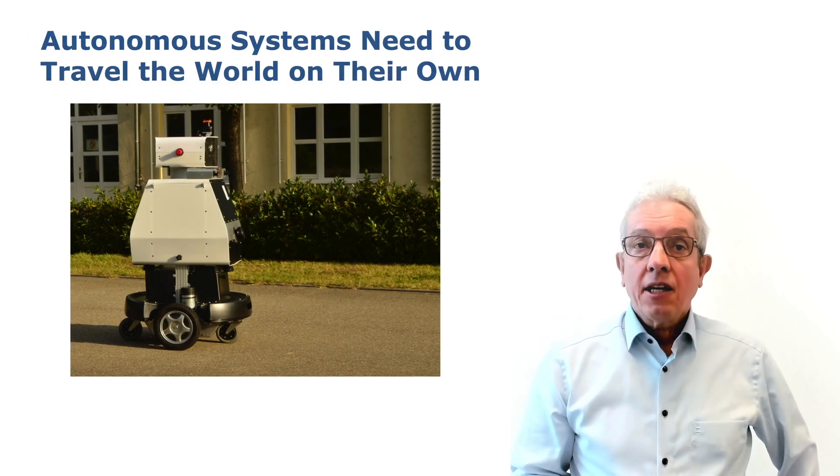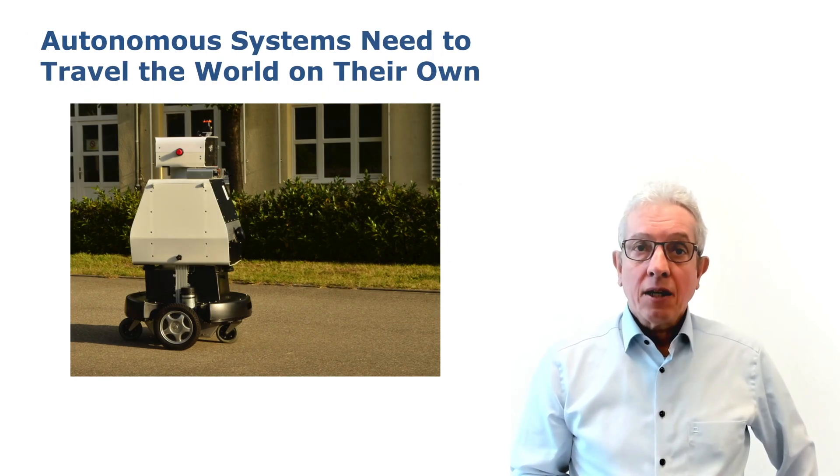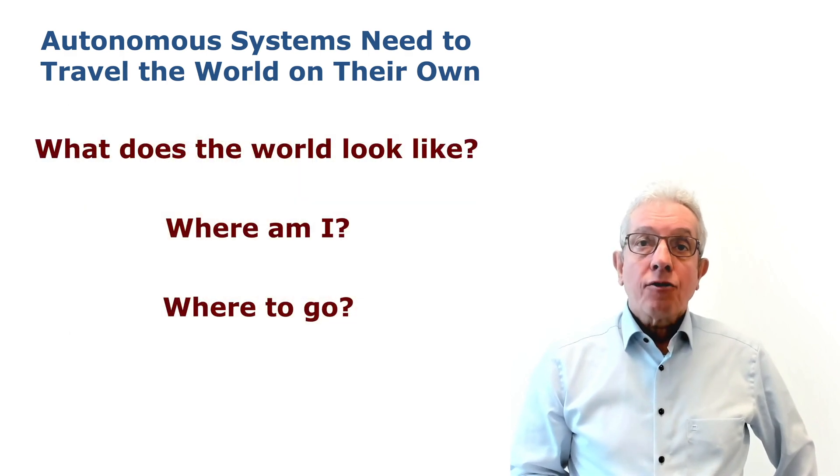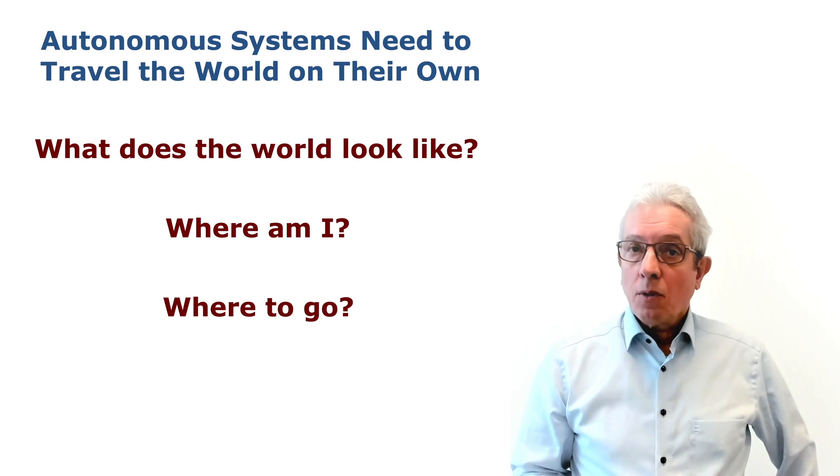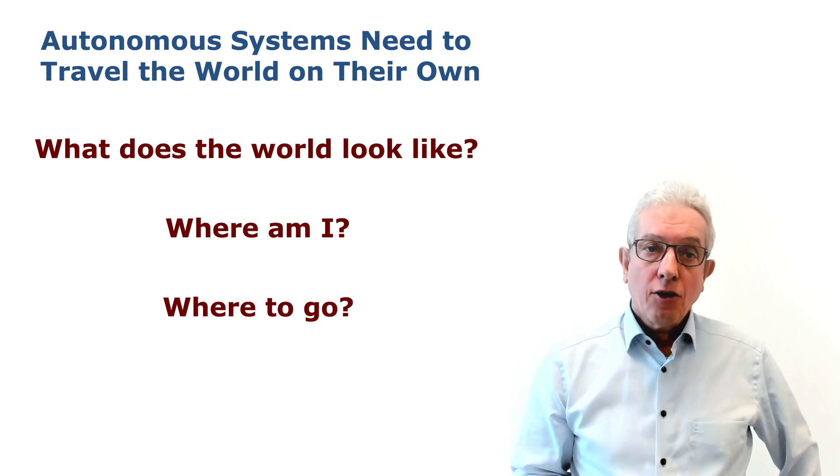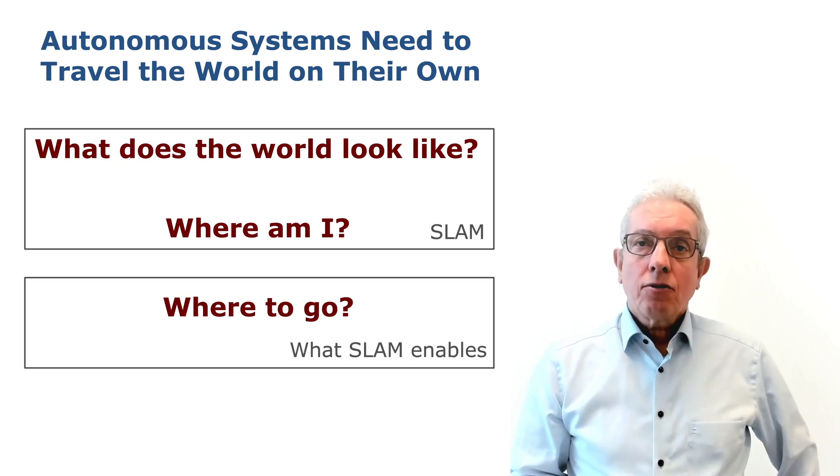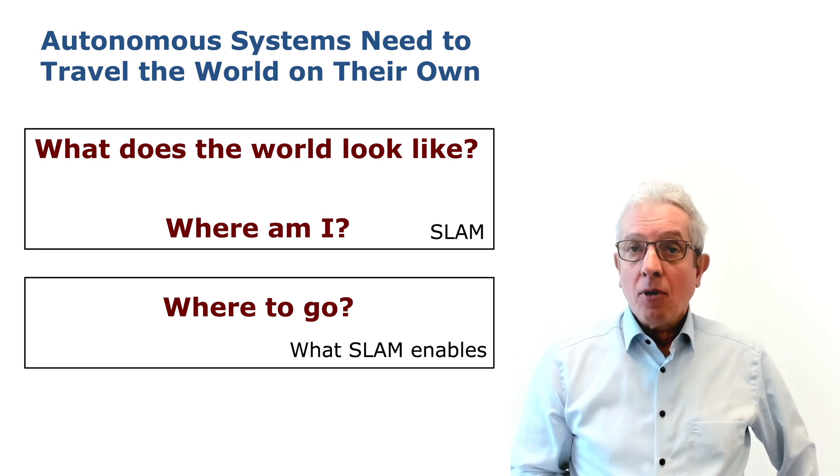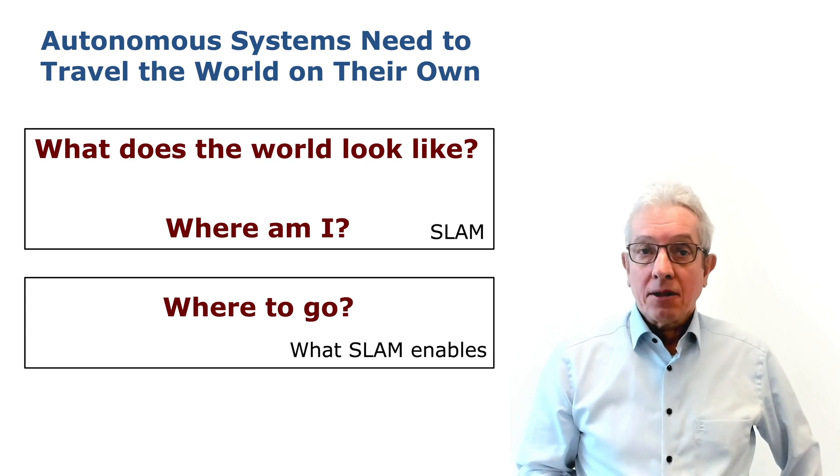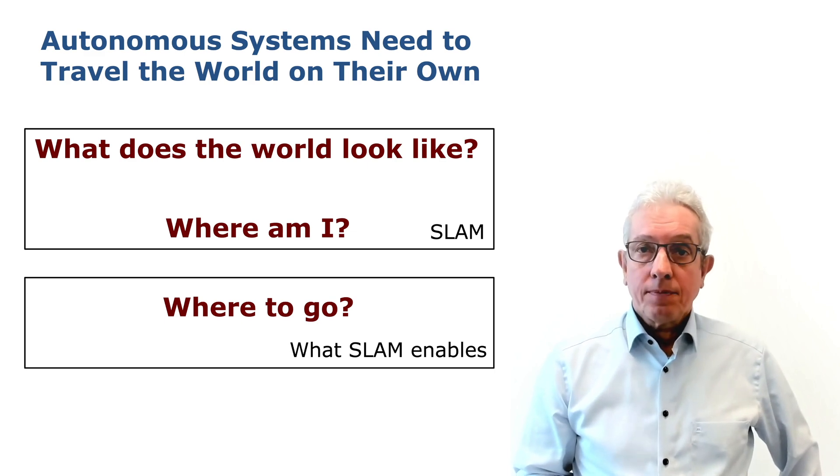To build robots that can autonomously navigate through their environment, we need to answer a couple of questions. The first one being, what does the world look like? The second one, where am I in this environment? And the third one, where should I go? The first two questions are answered by modern SLAM systems, while the third questions are enabled by solutions to the SLAM problem.